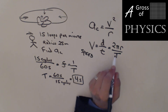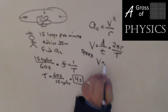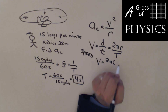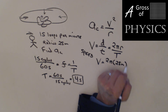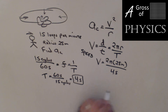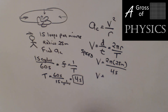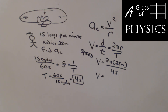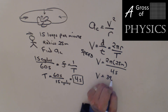To find speed, we calculate 2π × 25 meters over 4 seconds. That's 2 × 3.14 × 25 = 157, divided by 4, giving a speed of 39.25 meters per second. Remember, the velocity direction is always tangent to the circle, but the speed magnitude stays constant.